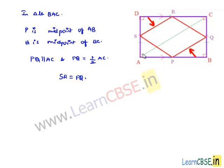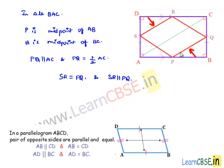Now in quadrilateral PQRS, two opposite sides are equal. We also have the condition that SR is parallel to PQ. So in quadrilateral PQRS, opposite sides are parallel and equal, and therefore we can say PQRS is a parallelogram.